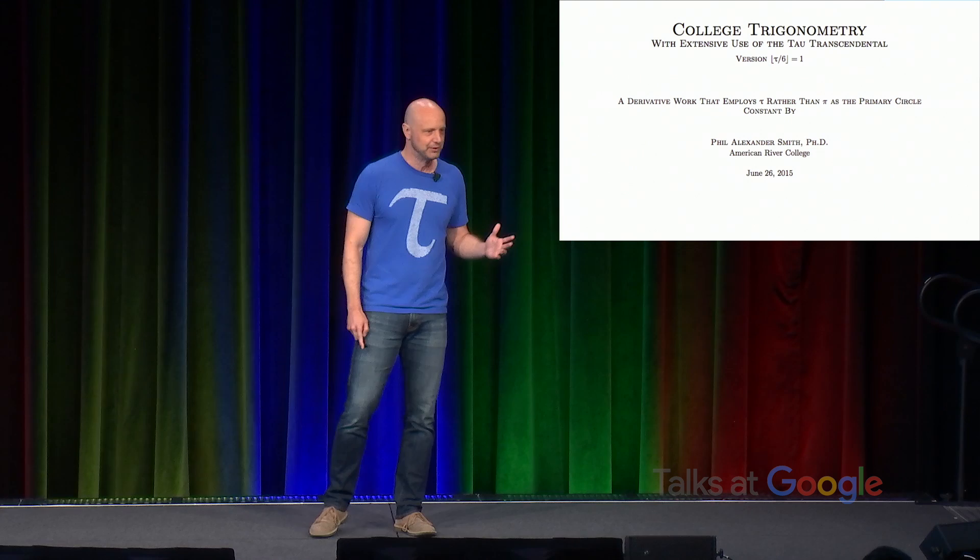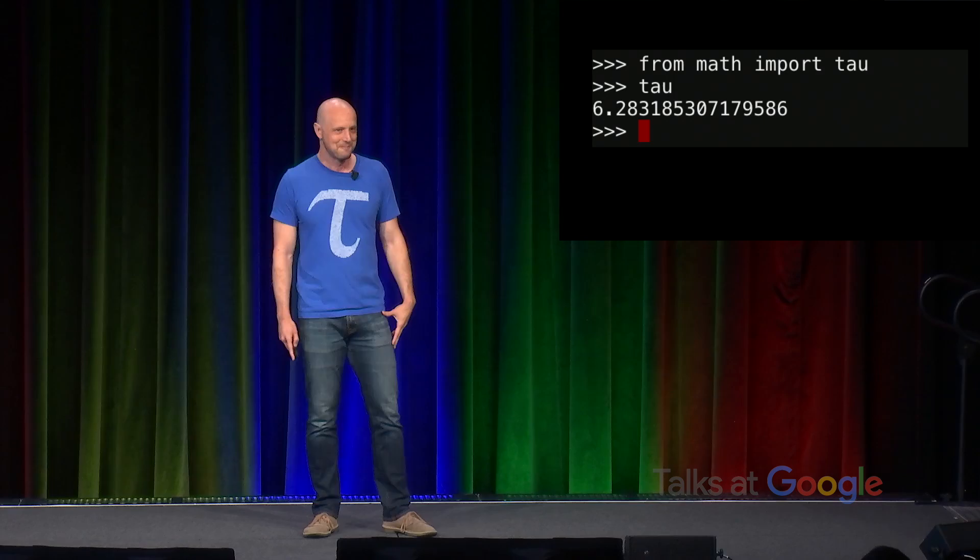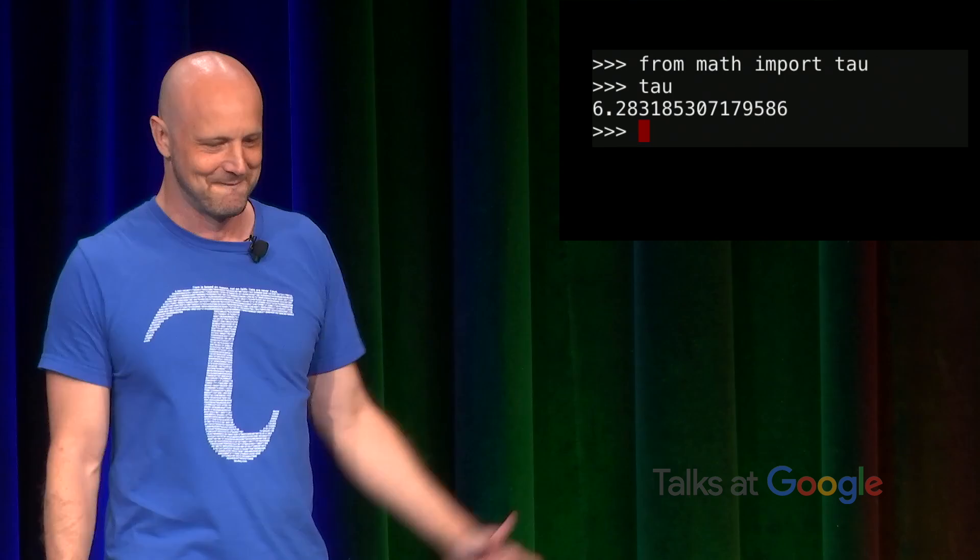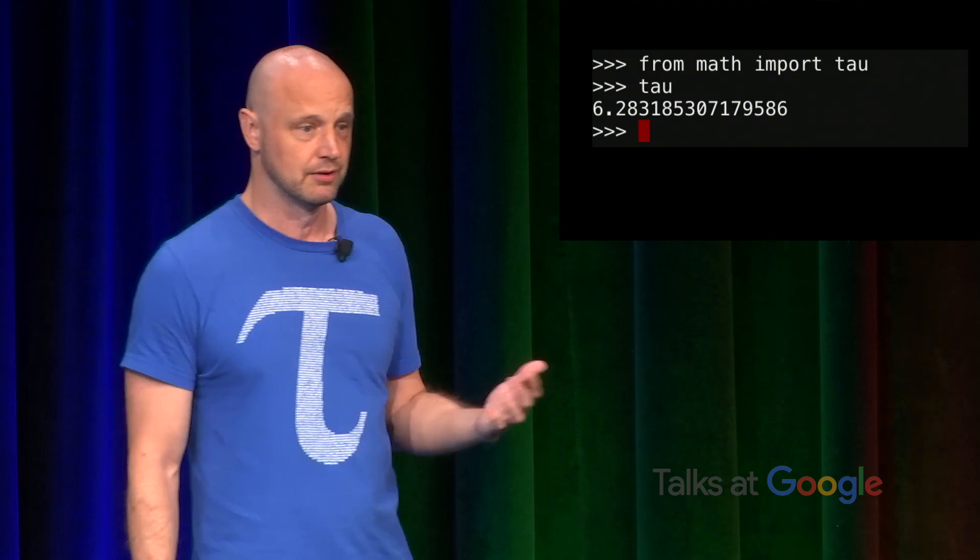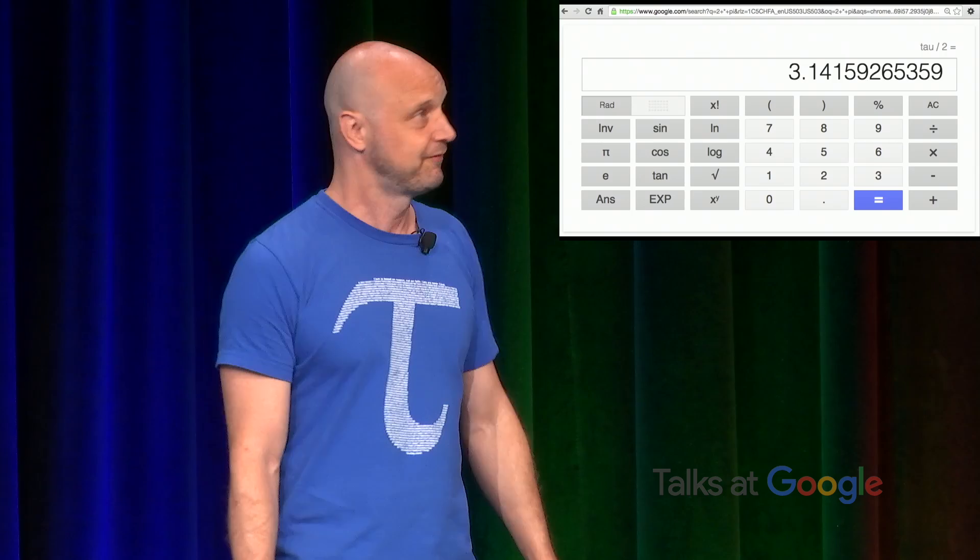So as of Python 3.6, from math import Tau, and there we are. I'm sure many people here also know that there's a calculator at Google. If you drop Pi into it, it'll evaluate it as 3.14159 and so on. But in fact, this isn't Pi. This is Tau over 2. So I want to find out who is responsible for this and buy that person a beer.